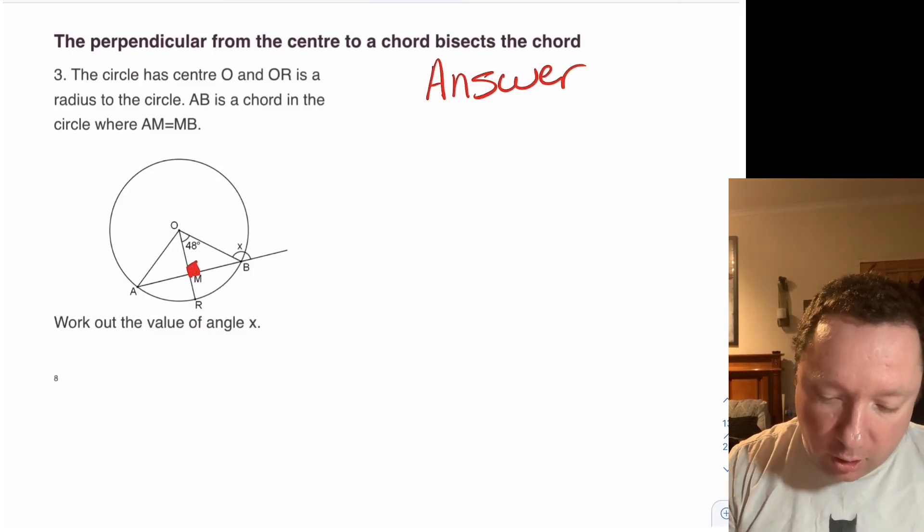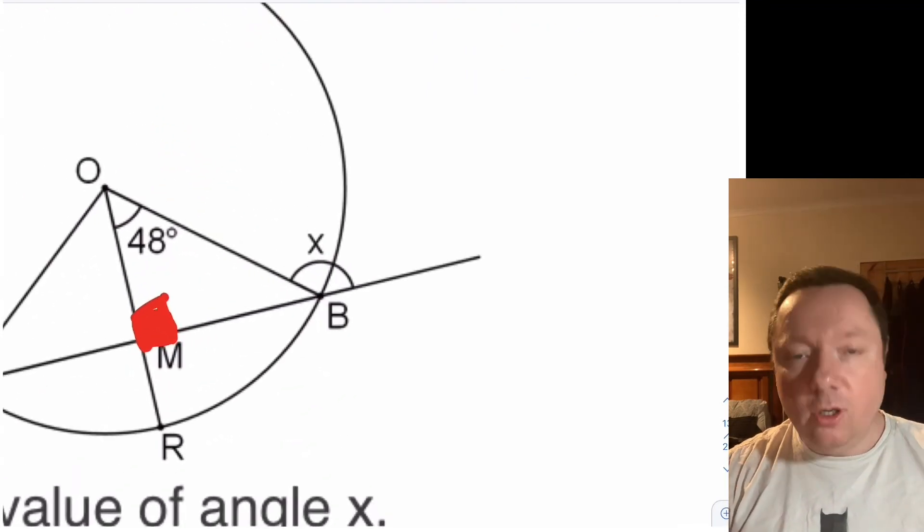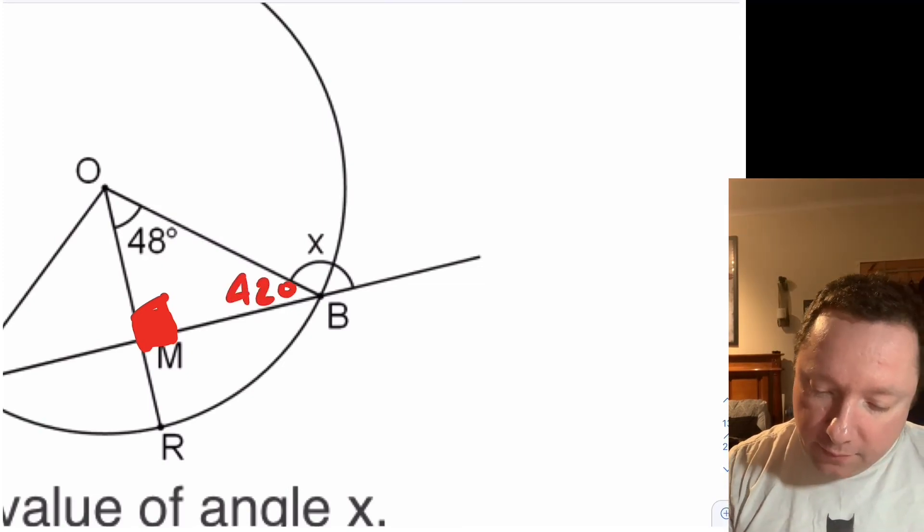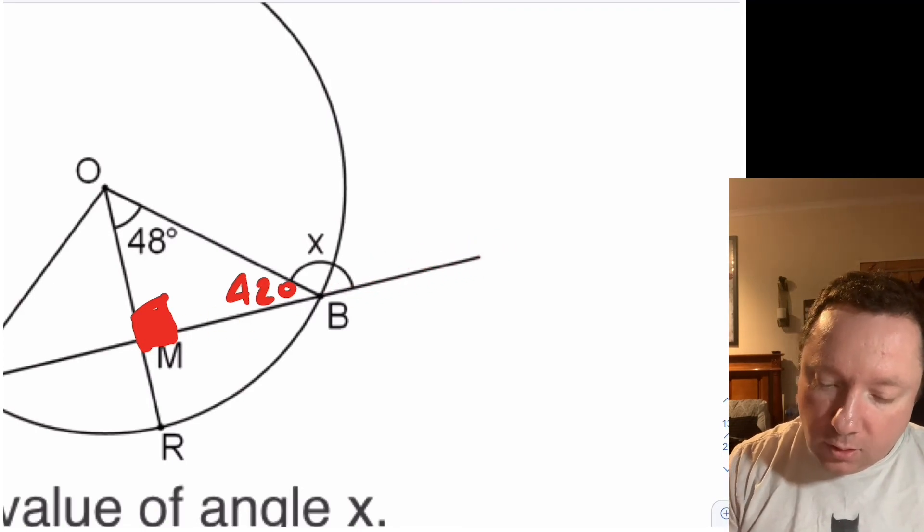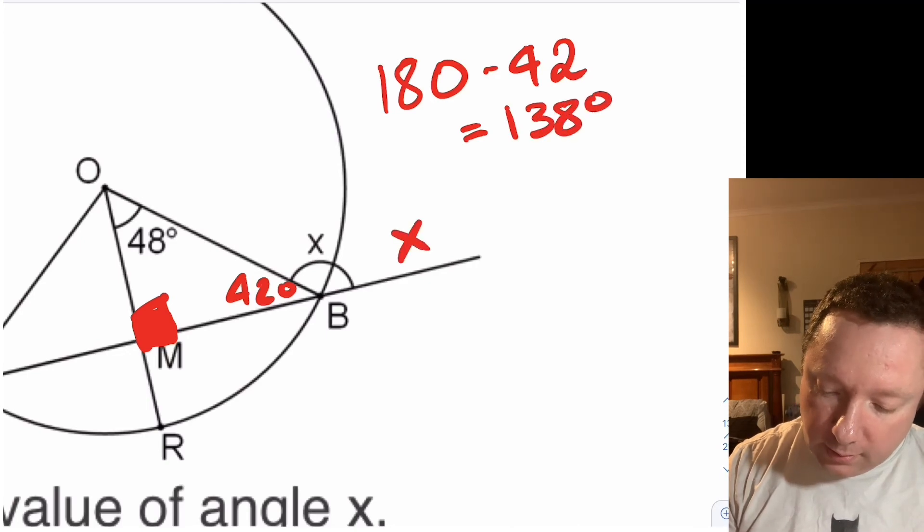And then we've got a triangle. And angles in a triangle add up to 180. So zooming in a little bit, since angles in a triangle add up to 180, I get 42 degrees down here. And then angles on a straight line also add up to 180. So 180 minus 42 is 138 degrees. So X equals 138 degrees.